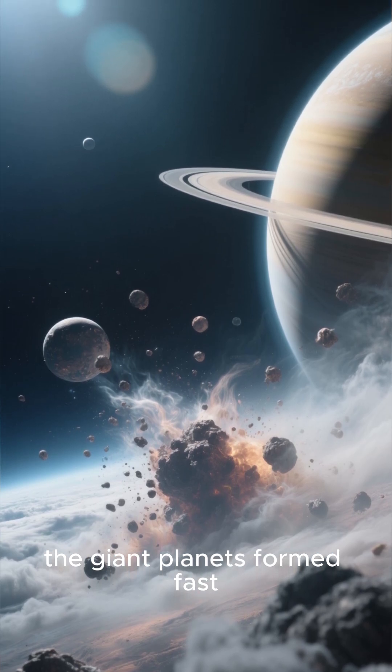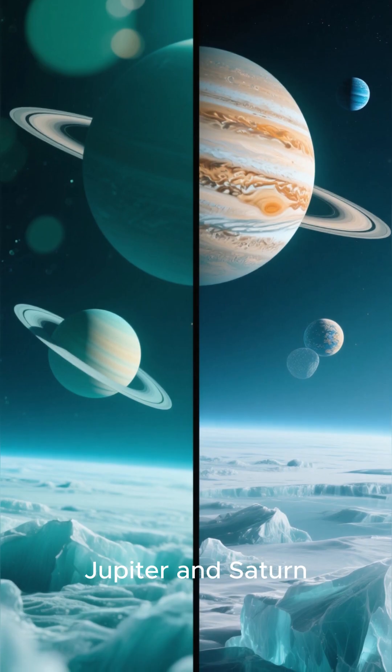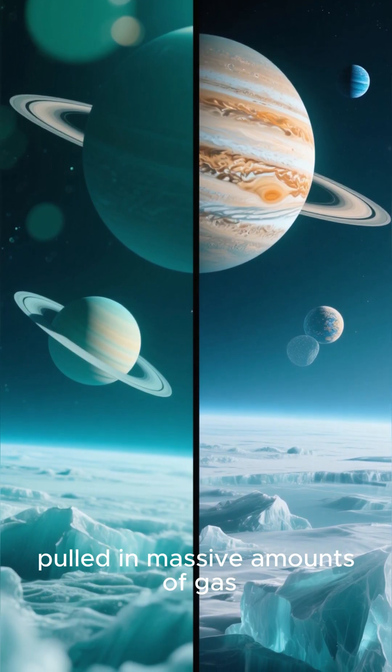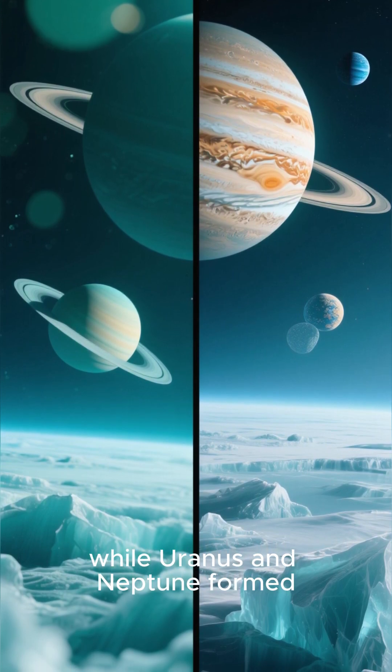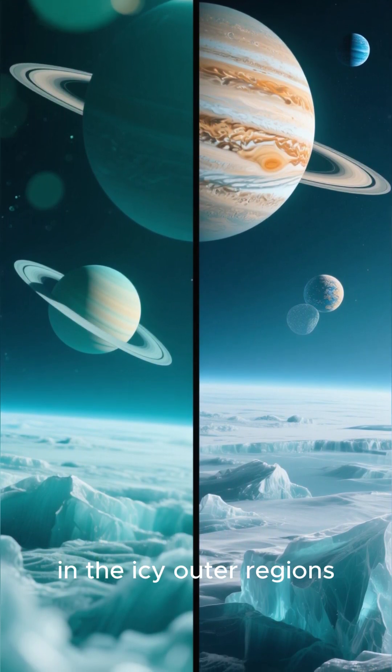Farther out, the giant planets formed fast. Jupiter and Saturn pulled in massive amounts of gas, while Uranus and Neptune formed in the icy outer regions.